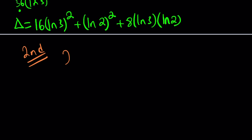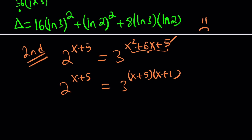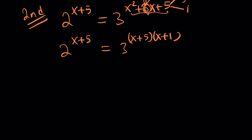Let's continue with the second method — hopefully someone can identify the error, because I couldn't find it. This is going to be much, much better and faster. Here's the trick: the exponent on the right is factorable. We can write x squared plus 6x plus 5 as x plus 5 times x plus 1 — you find two numbers whose product is 5 and whose sum is 6, which are 5 and 1. Notice that x plus 5 is a common exponent. So if x plus 5 equals 0, then x equals negative 5 is a valid solution.